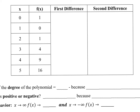How this works: you start with the largest value of x. The largest value of x is 5, and we work our way up. However the table is arranged, look at the largest value of x and work your way up. When you're subtracting, you're subtracting the function values. So we do 16 minus 9 — we get 7; 9 minus 4 is 5; 4 minus 1 is 3; 1 minus 0 is 1; and 0 minus 1 is negative 1.